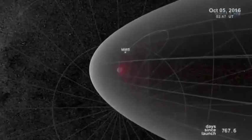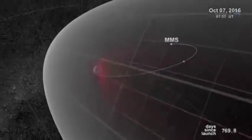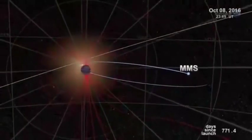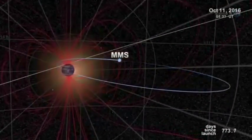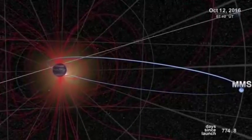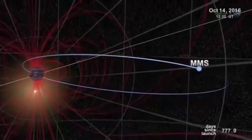the four spacecraft of MMS will spread out in Earth's magnetosphere and surround the portals to observe how they work. Just one problem: finding them. Magnetic portals are invisible, unstable, and elusive. They open and close without warning, and there